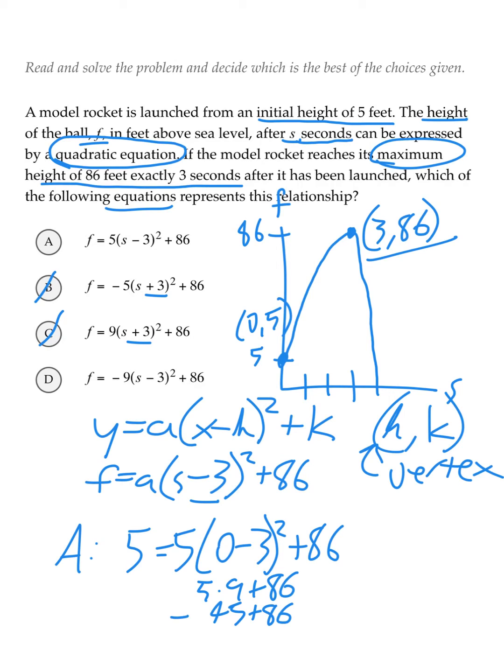And I'm going to estimate that 45 plus 86 is not equal to 5. So let's get rid of a, which leaves us with d, which is our right answer.